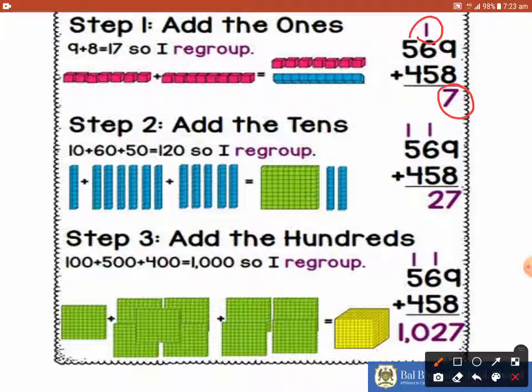Now we are going to the next place which is the tens place. On tens place, we have 6 plus 5 that gives you 11 but this carryover 1 will also be added. So 11 plus 1 gives you 12 and for 12, 2 will be written at the bottom and 1 on the top.